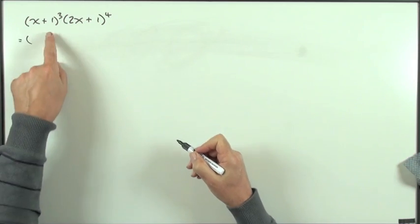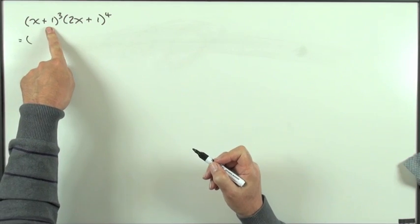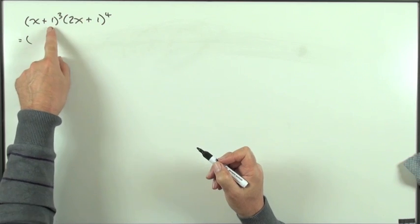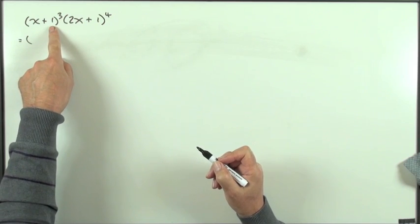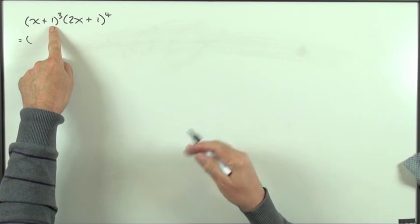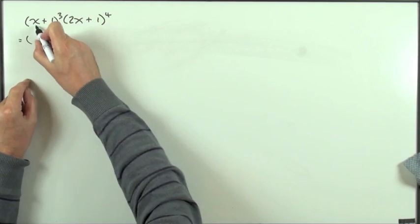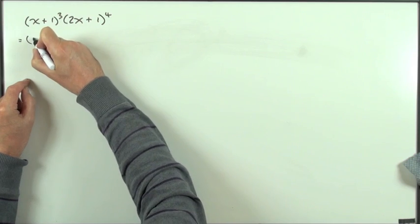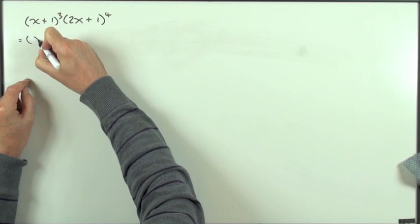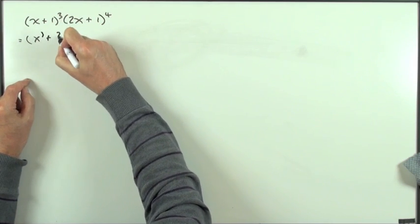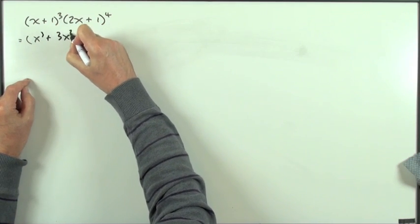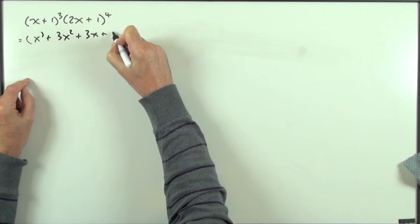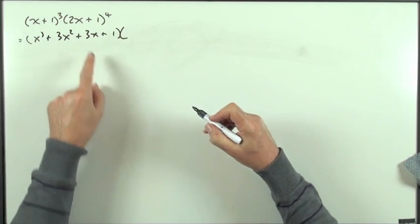Individually they're quite trivial. That first one, power 3, gives 1, 3, 3, 1. That term being 1 has no effect on the coefficients, so it's just decreasing powers of x. So it'll be x to the power of 3, 3 times x squared, 3 times x, and 1. Easy.